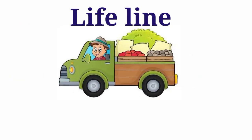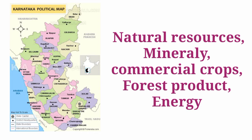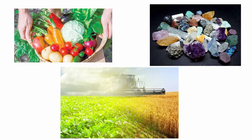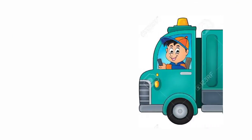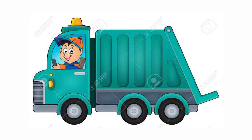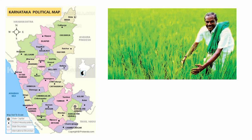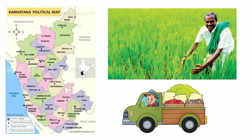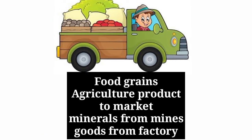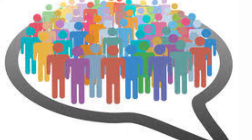Transport is the lifeline in the progress of agriculture, industries, and commerce. Karnataka is a land with various natural resources — minerals, commercial crops, forest produce, and sources of energy are all available here. In order to achieve economic development through the proper use of those resources, an efficient transporting system is necessary. Karnataka has well-developed road, railway, water, and air transporting facilities.